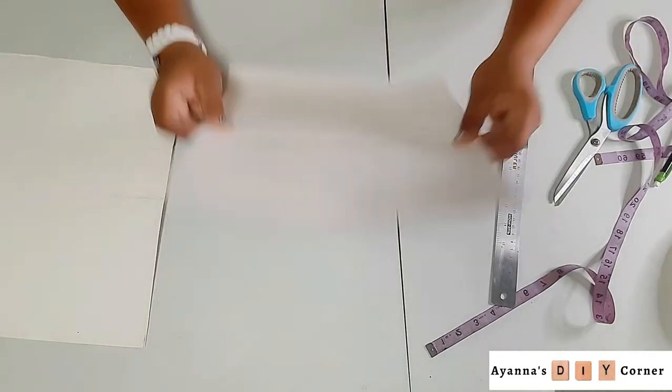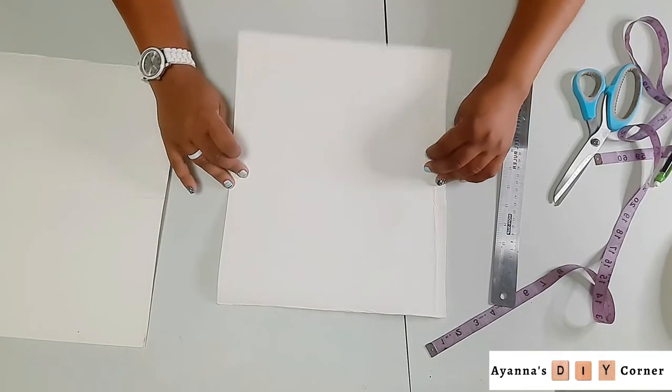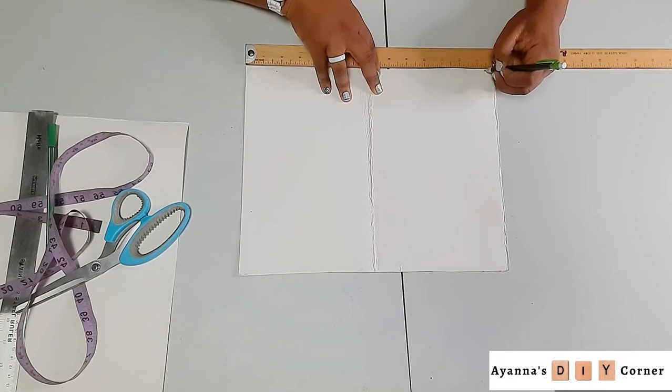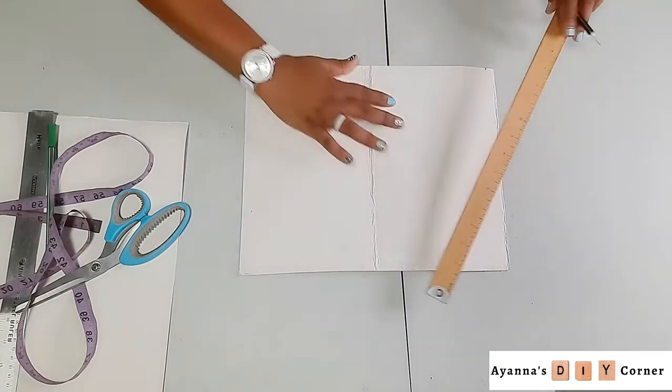Next, let's work on the body. Grab the next sheet of paper and measure out that body measurement you calculated earlier. For me, it was 13, which is what I'm doing here.